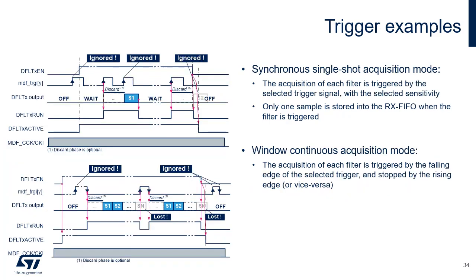In synchronous single shot acquisition mode, the acquisition of each filter is triggered by the selected trigger signal with the selected sensitivity. Whenever the digital filter is in WAIT state and the trigger condition occurs, a sample is processed and stored in the RxFIFO. The DFLT-X RUN flag informs the application whether the digital filter is ready to accept a new trigger event. Trigger signals are ignored until the filter is in WAIT state as indicated in the upper timing diagram. In window continuous acquisition mode, the acquisition of each filter is triggered by the falling edge of the selected trigger and stopped by the rising edge or vice versa. The falling edge of MDF-TRGI-Y signal is used to trigger the acquisition and the rising edge to stop it. When DFLT-XEN is deasserted, the triggers are ignored.